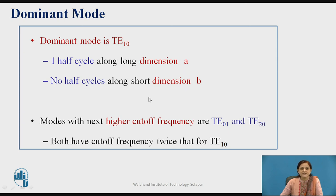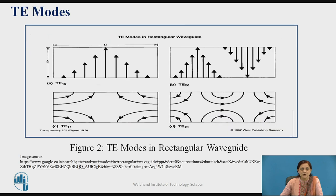Modes with the next higher cut-off frequency are TE01 and TE20, which have a cut-off frequency twice that of the dominant mode TE10. This shows the different mode configurations for the TE wave. In figures A and B, there is variation along the wider dimension A with no variation along dimension B. In figures C and D, there is half-wave variation along both A and B directions. TE10 and TE20 modes are shown — in TE20, there are two half-wave variations.